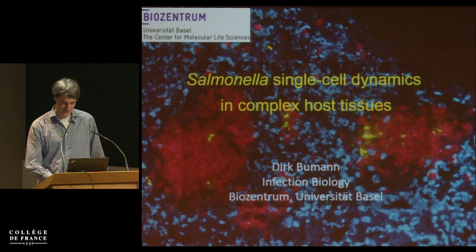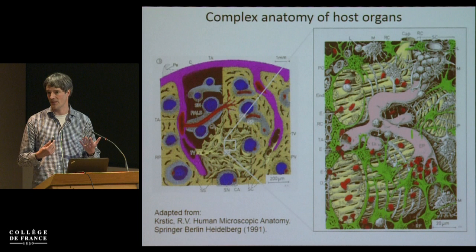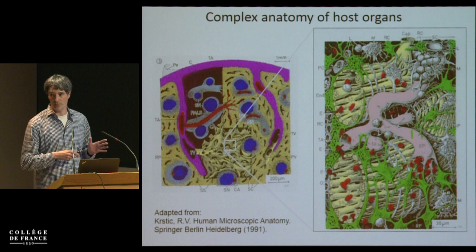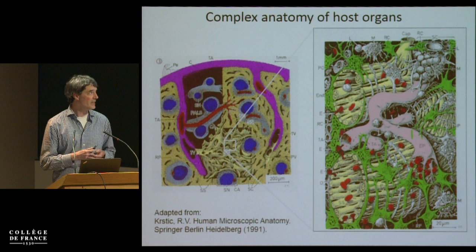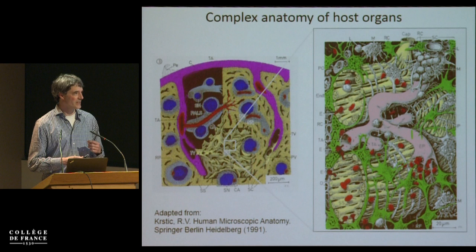I made the mistake to purchase an old book about human anatomy. This shows the structure of the human spleen. The spleen is one of the major target organs of Salmonella, our pet model organism. There are really profound physiological and functional differences between different compartments within the same organ. And if you zoom in, you see a really large diversity of different host cell types, again with different function and different physiology.